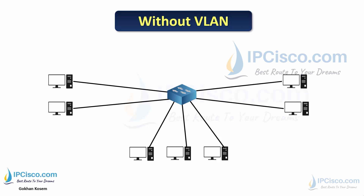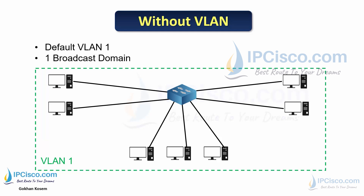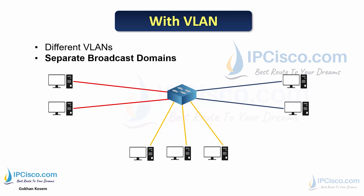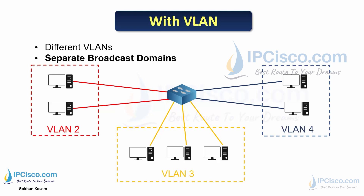In a scenario without VLANs: we have a switch with PCs connected. Without any VLAN configuration, all switch ports are in VLAN 1, creating only one broadcast domain — when one PC sends a packet, all PCs receive it. With VLANs configured, different ports are assigned to different virtual LANs, creating separate broadcast domains. As shown on screen, there are three VLANs: VLAN 2, VLAN 3, and VLAN 4. When a PC in VLAN 2 sends data, only PCs in VLAN 2 receive it. The same applies to VLAN 3 and VLAN 4.